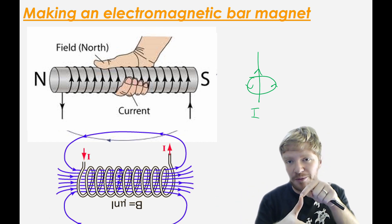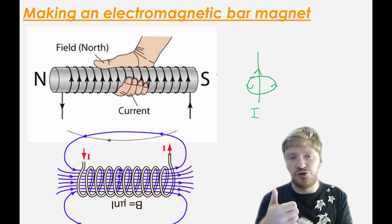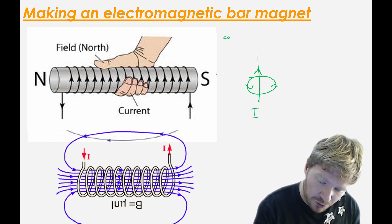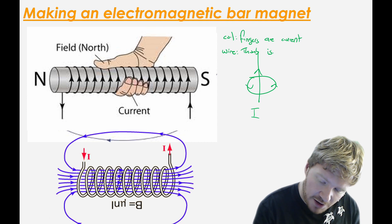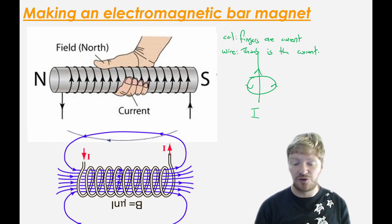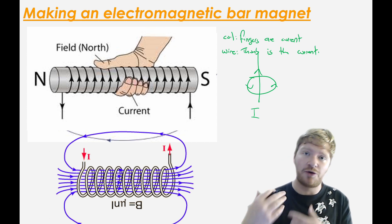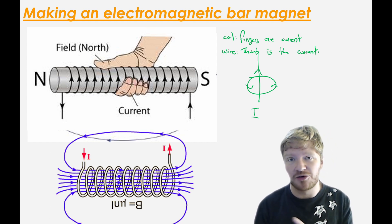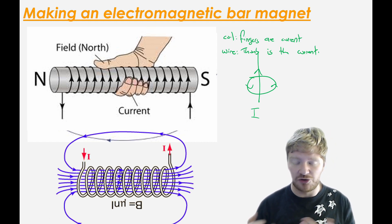So you use your thumb as the current for a wire. You use your fingers as the current for a coil. I'll just write this down here. So for a coil, your fingers are current. For a wire, your thumb is the current. Okay? Then in both cases, for the coil, if your fingers are the current, your thumb points north. With a wire, if your thumb is the current, your fingers point in the direction that the field is going.